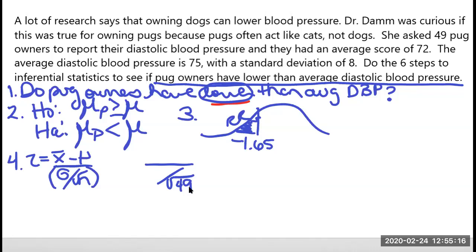And they had an average score of 72. So what is 72 here? That's our x bar. Then it says the average diastolic blood pressure is 75. So what's going to be 75 in my equation? That's my mu. So make sure you're able to successfully put these all in the right place. The last piece I have is the standard deviation and so that's 8.